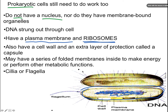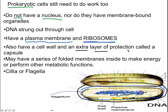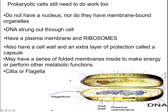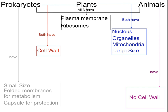Ribosomes make proteins. Prokaryotic cells also have a cell wall outside of the plasma membrane, and an extra layer of protection called a capsule. So they have three layers of protection: the plasma membrane, the cell wall, and the capsule. They may also have a series of folded membranes inside, but these are not organelles. Sometimes they also have flagellum — tails — or cilia, which are little hair-like structures.